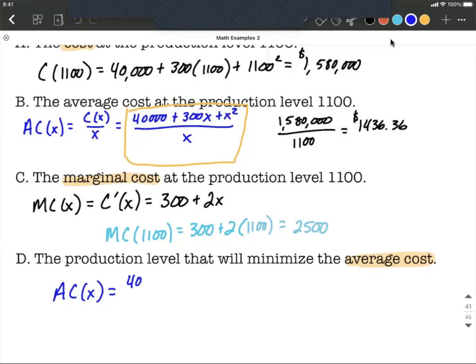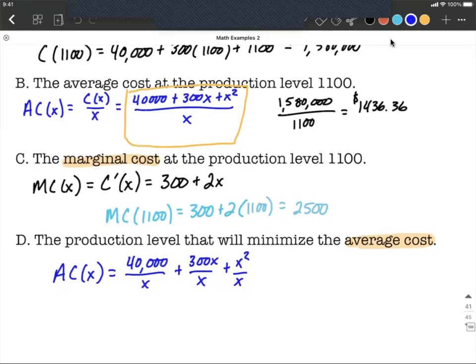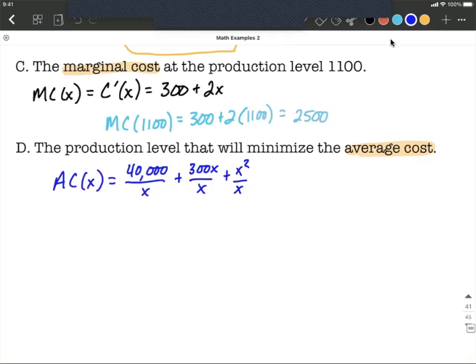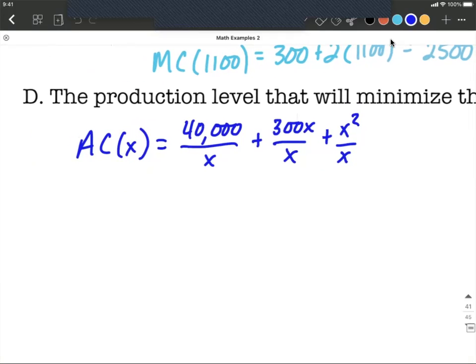So I'm going to say that's 40,000 divided by x, plus 300x over x, plus x² over x. Now why I'm doing this is I am going to have to take the derivative of our average cost to find critical numbers and then figure out where we get a minimum at. Instead of using the quotient rule I think it's going to be a little bit easier if we break this down, rewrite it so that we can use the power rule instead.